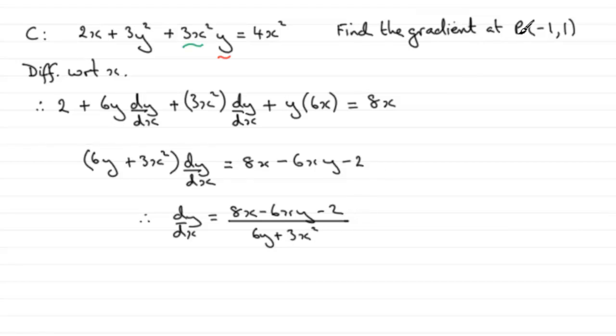So for the gradient at P, all we need to do is say that when x equals minus 1, y equals 1. Therefore, we can work out what that gradient is by substituting these values into dy/dx.